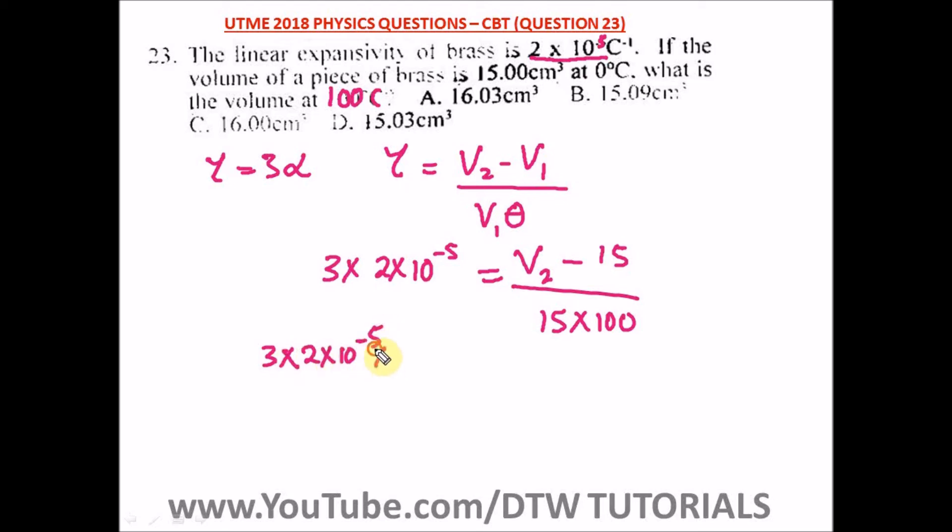So we have 3 × 2 × 10⁻⁵ × 1500 = V₂ - 15. When we're punching our calculator, if we multiply all this together, we're going to get 0.09 = V₂ - 15.